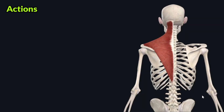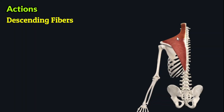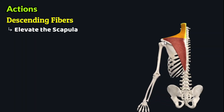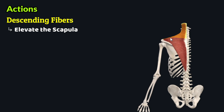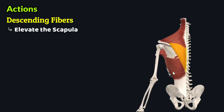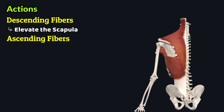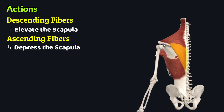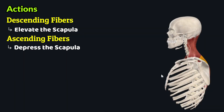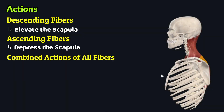The descending or superior group of fibers elevates the scapula, also called elevation of the shoulder girdle. These fibers act on the acromion of the scapula and by contraction elevate the scapula. The ascending or inferior group of fibers depresses the scapula — these fibers act on the spine of the scapula and by contraction depress the scapula.